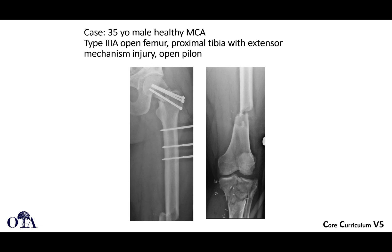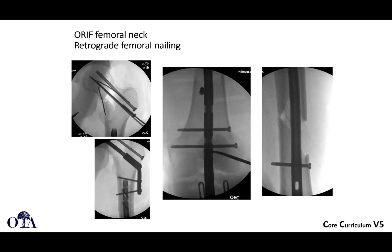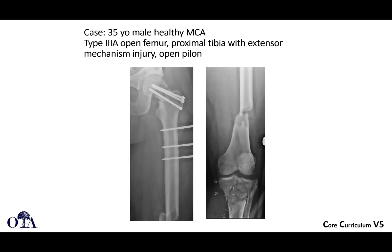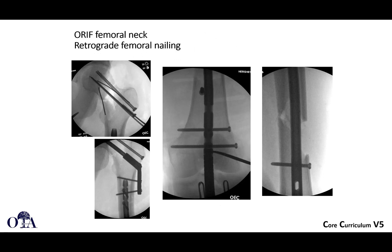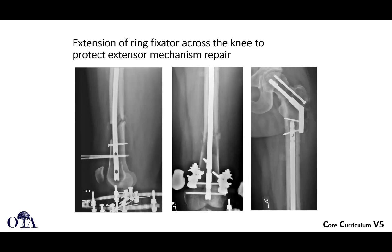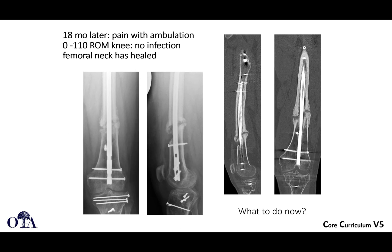Here's another case: a 35-year-old male, healthy motorcycle accident, type 3A open femur, proximal tibia with extensor mechanism injury, open patellar fracture. The patient was initially treated with external fixation and preliminary screw fixation of the femoral neck, then went back for open reduction internal fixation of the femoral neck and retrograde femoral nailing. A sliding hip screw device was also used, and the ring fixator was extended across the knee to protect the extensor mechanism repair. Eighteen months later, the patient still has pain with ambulation, 0 to 110 degrees range of motion of the knee, no infection diagnosed, femoral neck healed, but there is a diaphyseal non-union of the open femoral shaft fracture — well-aligned, reasonably stabilized, but still did not go on to heal.